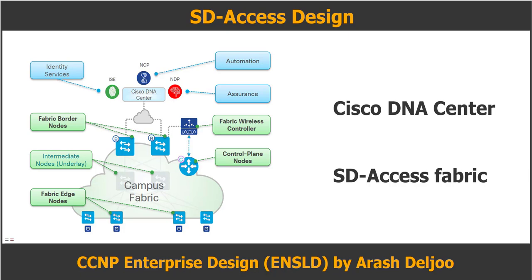Two main components make up SD Access architecture. First, Cisco DNA Center. Second, the SD Access fabric. Cisco DNA Center has a rich set of features and benefits grouped into these core areas: automation, design, policy, provision, and assurance.